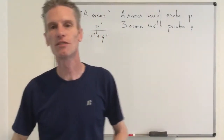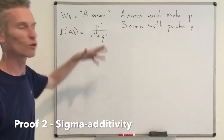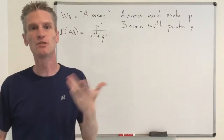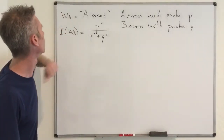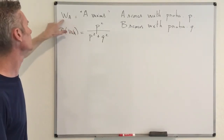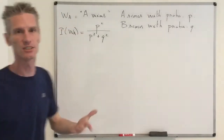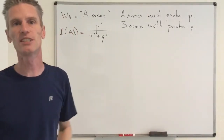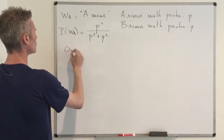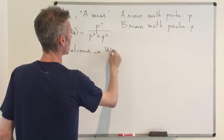Now let's solve the problem using sigma-additivity instead. The answer found by conditioning was P²/(P² + Q²). The idea of this technique is to write all possible outcomes in the event W_A and then say that the probability of W_A is the sum of the probabilities of all those individual outcomes.